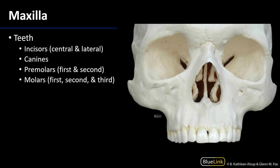Let's talk about teeth. There are teeth of the maxilla and teeth of the mandible. Adult humans typically have 32 teeth. The numbering convention starts with number one for the right third maxillary molar, comes over to 16 for the left third maxillary molar, then goes down to 17 for the left third mandibular molar, and over to 32 for the right third mandibular molar.